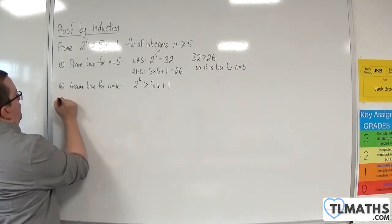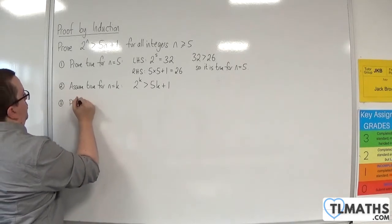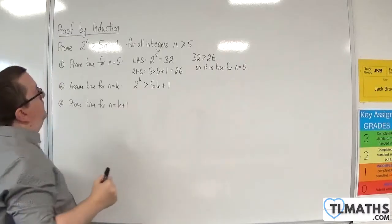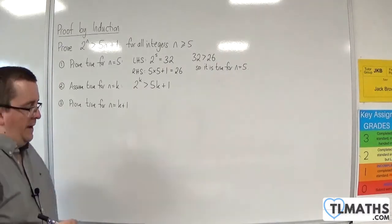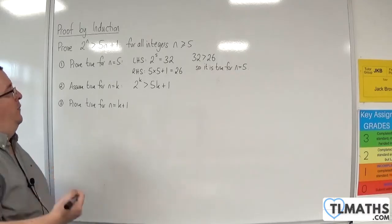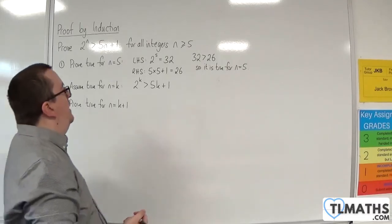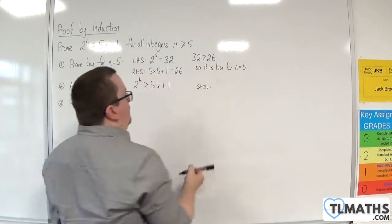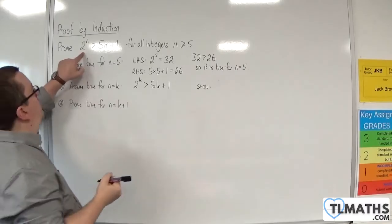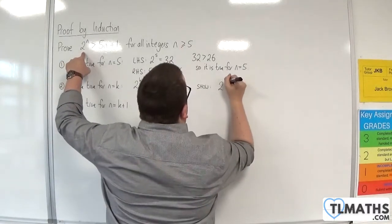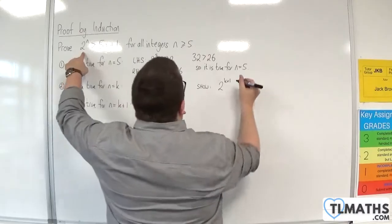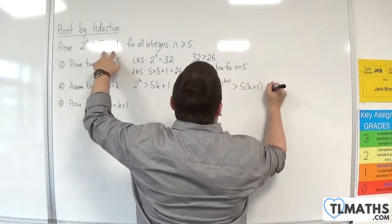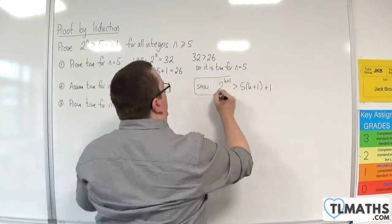Now, step 3, prove it is true for n equals k plus 1. So what I really need to think about is a target. What is my target here? What do I need to show? So over to one side, I'm going to write down what I want to show. I want to show that 2 to the k plus 1, so when n is k plus 1, is greater than 5 lots of k plus 1 plus 1. That's what I want to show. That's my target.